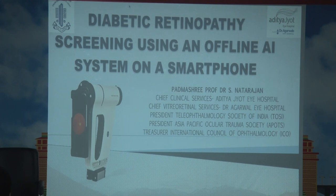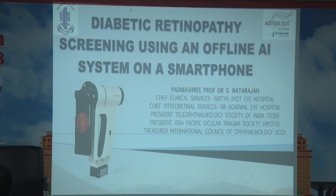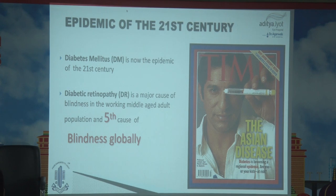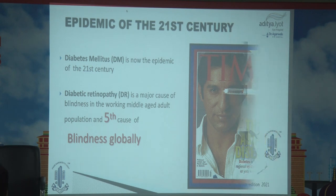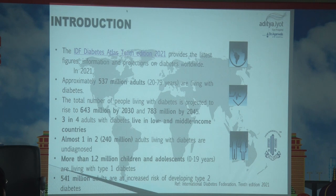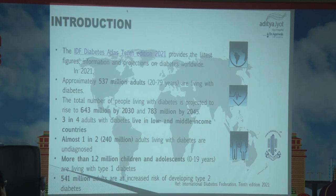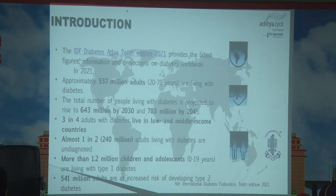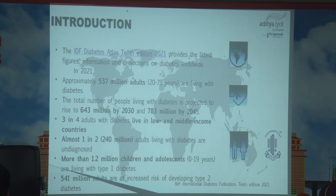My talk is on diabetic retinopathy screening using an offline AI system on a smartphone. The epidemic of the 21st century is diabetes mellitus, and diabetic retinopathy is a major cause of blindness in the working middle-age adult population and the fifth cause of blindness globally. IDF says approximately 537 million adults are living with diabetes; the total will reach 643 million by 2030 and 783 million by 2045. Three in four adults with diabetes live in low- and middle-income countries. Almost one in two adults with diabetes are undiagnosed, and more than 1.2 million children and adolescents live with type 1 diabetes. 541 million adults are at increased risk of developing type 2 diabetes.